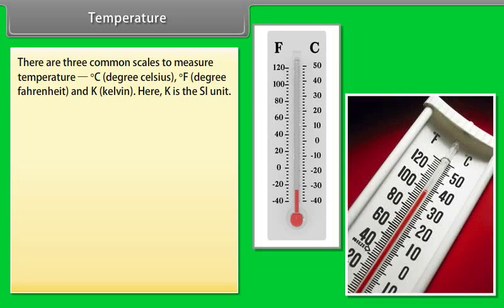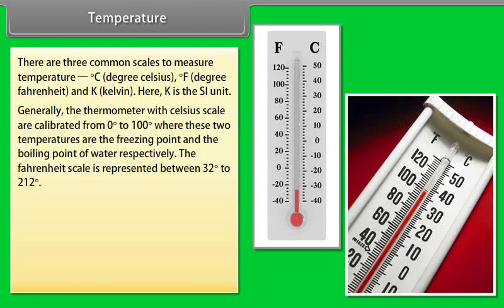There are three common scales to measure temperature: degree Celsius, degree Fahrenheit, and Kelvin. Here K is the SI unit. Generally the thermometer with Celsius scale are calibrated from 0 degree Celsius to 100 degrees, whereas these two temperatures are the freezing point and the boiling point of water respectively. The Fahrenheit scale is represented between 32 degrees to 212 degrees.